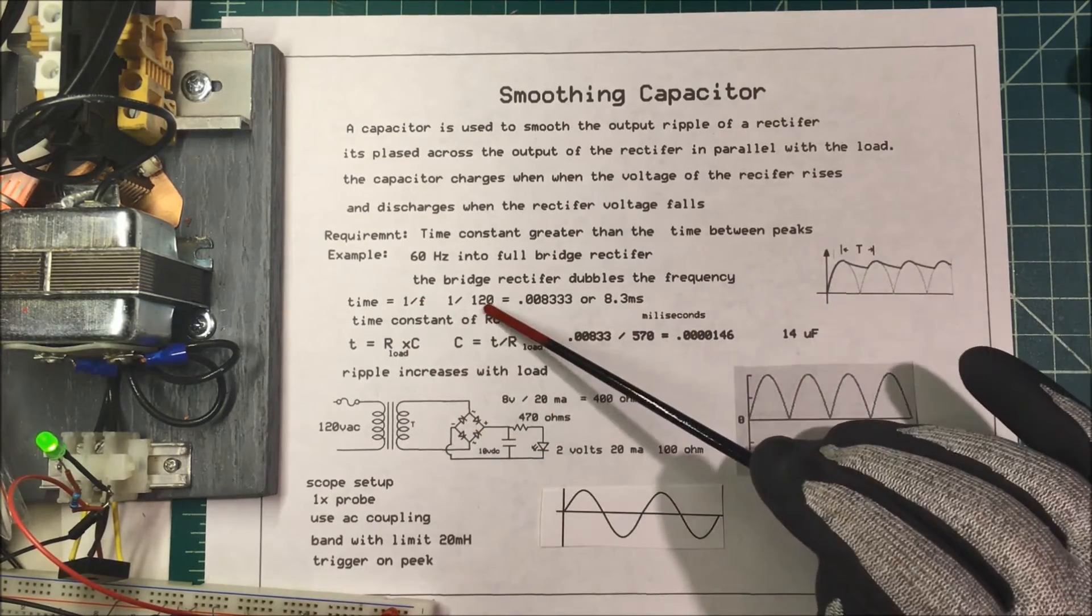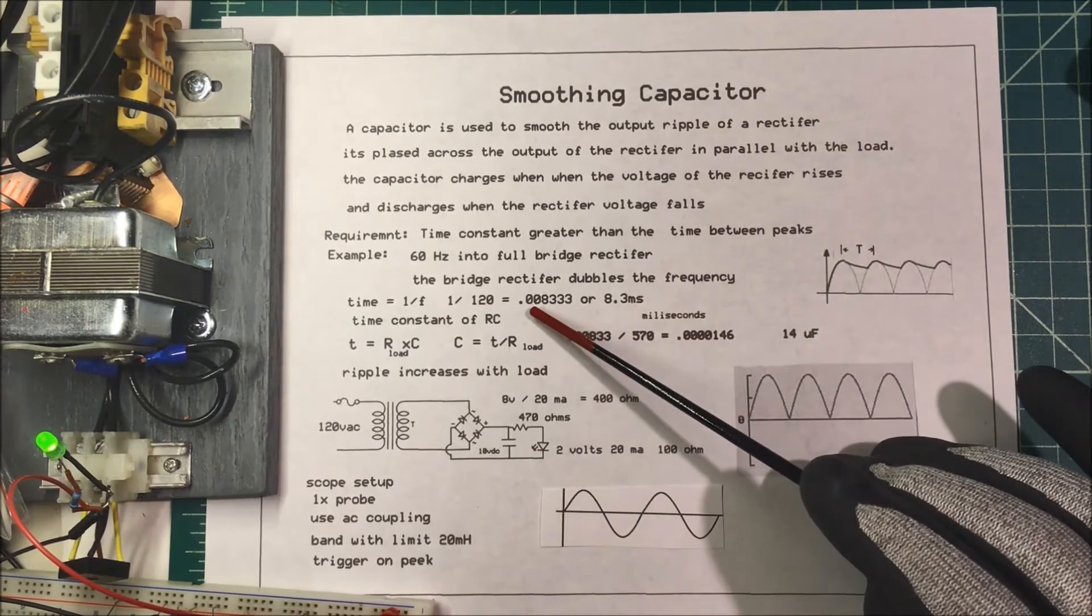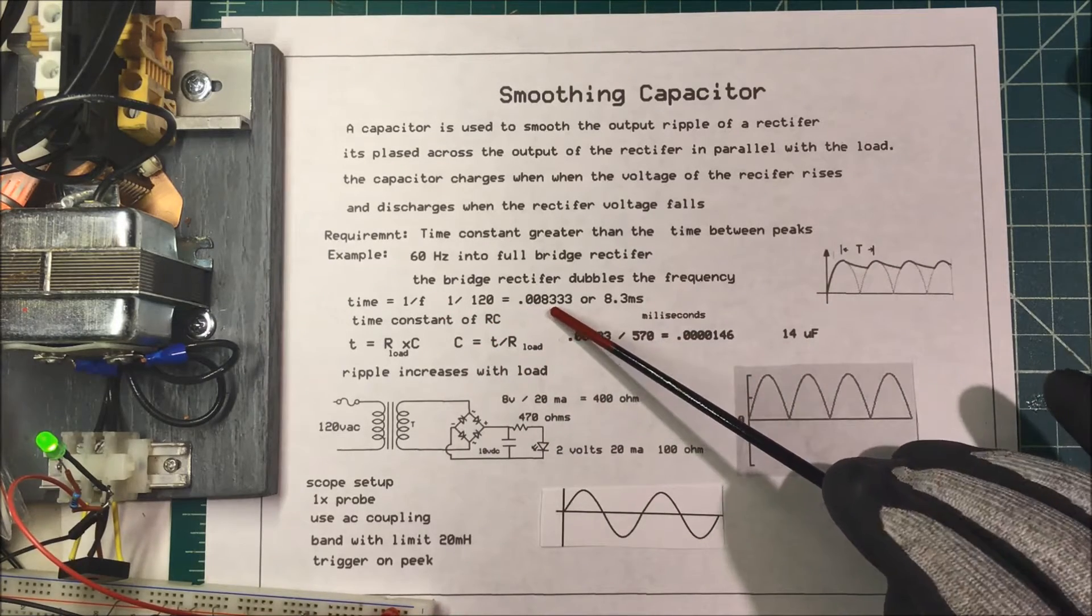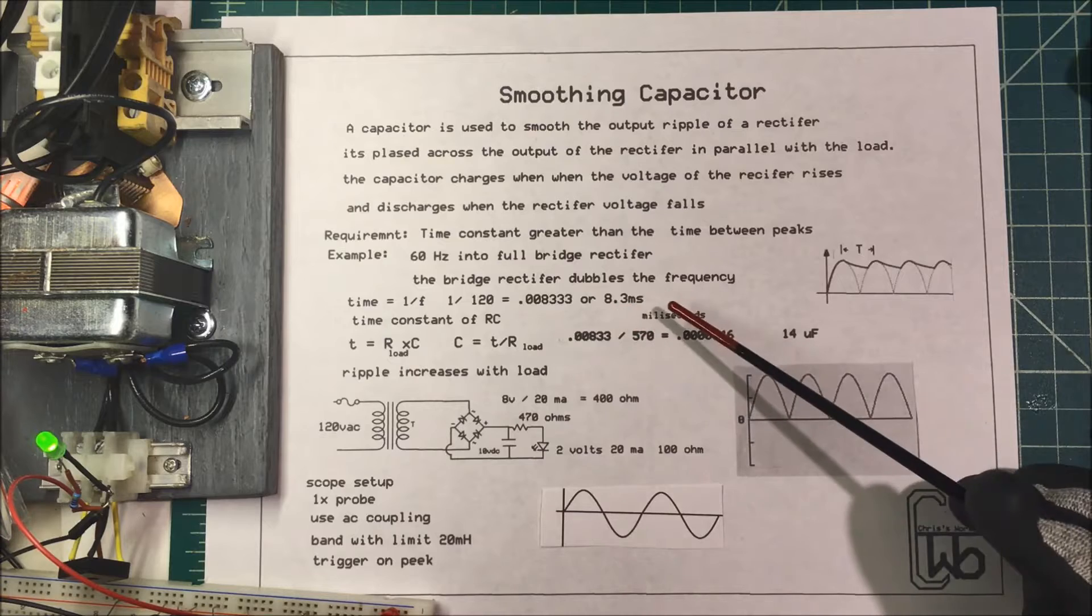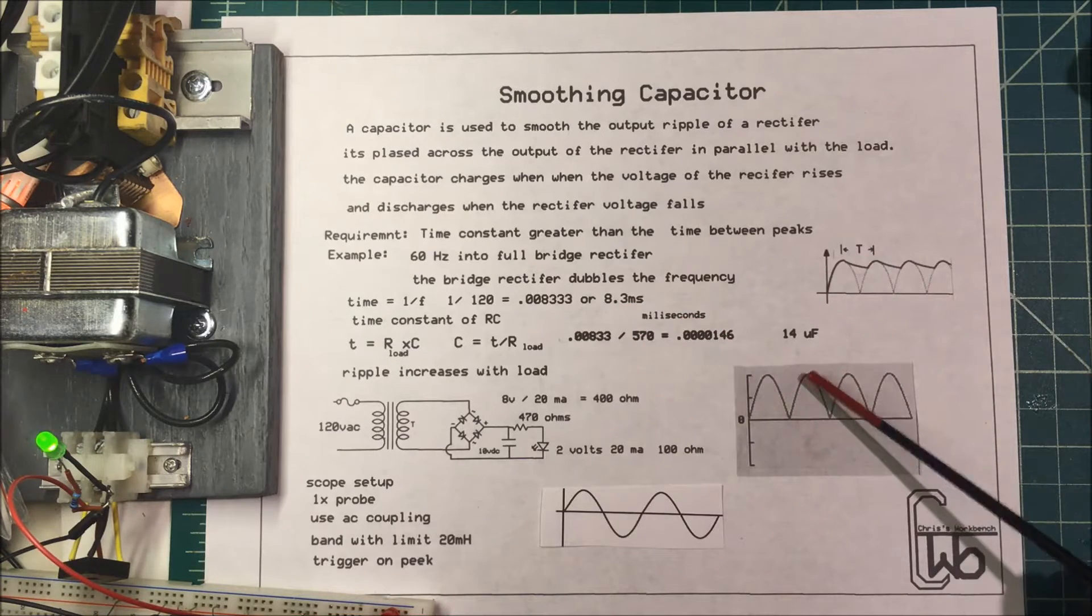To find your time you take the frequency and divide that into one. So 120 divided into one, that's 0.0083 or 8.3 milliseconds. That's the time between these two peaks.